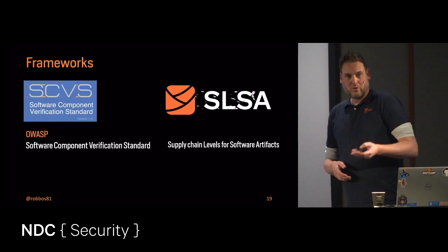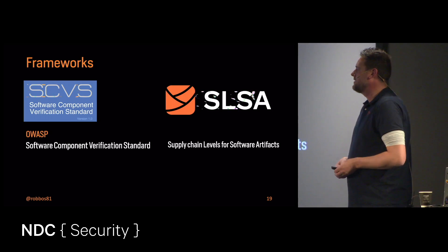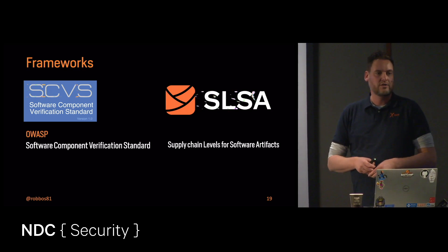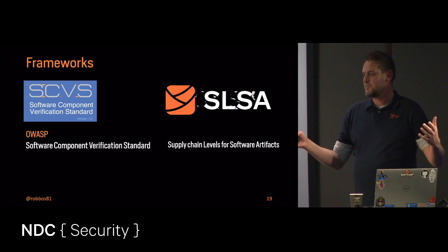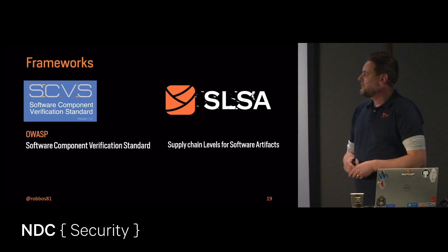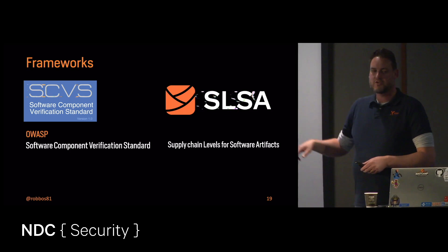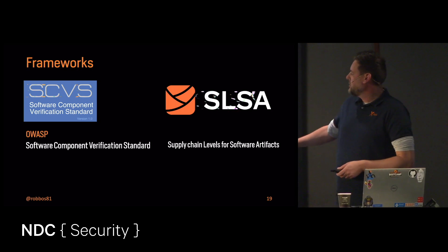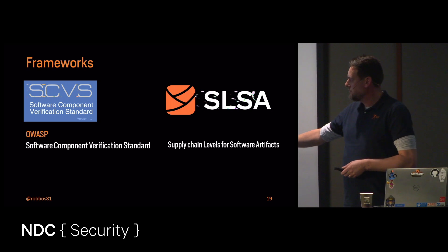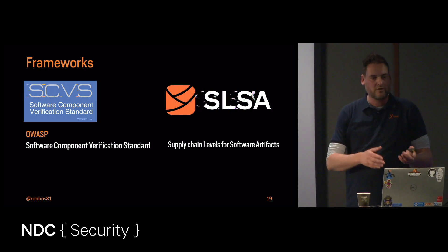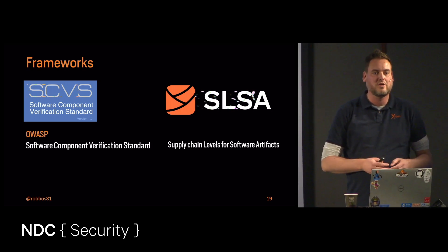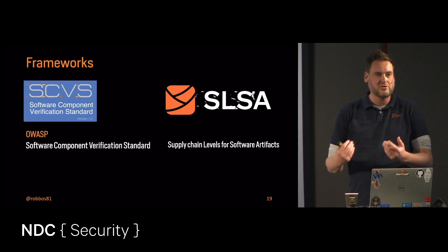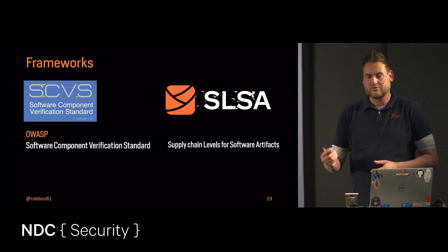I'm going to talk about two frameworks. One is from OWASP — the Software Component Verification Standard (SCVS). It covers your entire supply chain and all the things you're doing to make everything secure. The other newer one is SLSA — Supply Chain Levels for Software Artifacts — also pronounced 'salsa'. It covers the whole supply chain and all the artifacts you produce, including where they came from, which pipeline ran, which runner executed your pipeline, and what was installed at the time of execution.